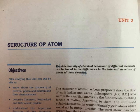In this unit, we start with experimental observations made by scientists towards the end of the 19th and beginning of the 20th century. This established that atoms can be further divided into subatomic particles — electrons, protons and neutrons — a concept very different from that of Dalton. The major problems before scientists at that time were to account for the stability of atom, to compare the behavior of elements in terms of physical and chemical properties, and to explain the formation of different kinds of molecules.